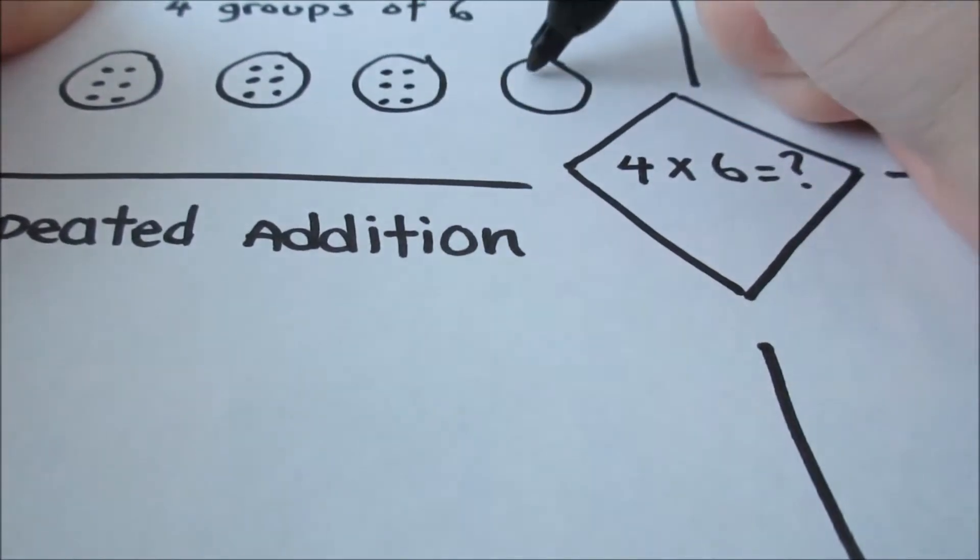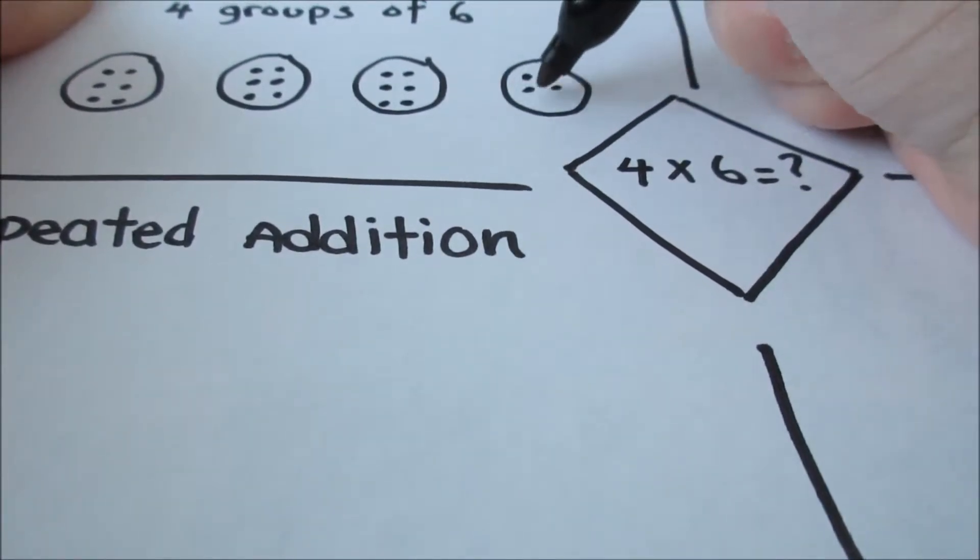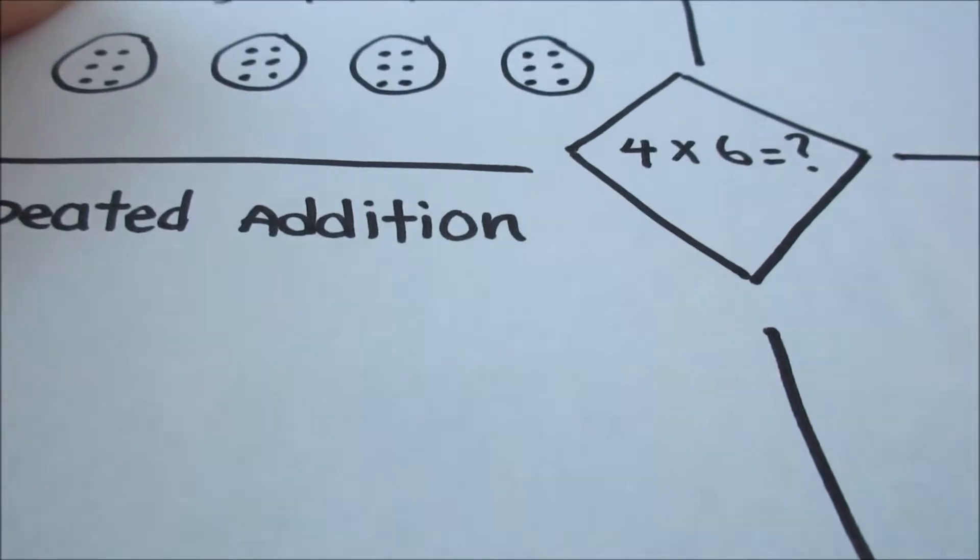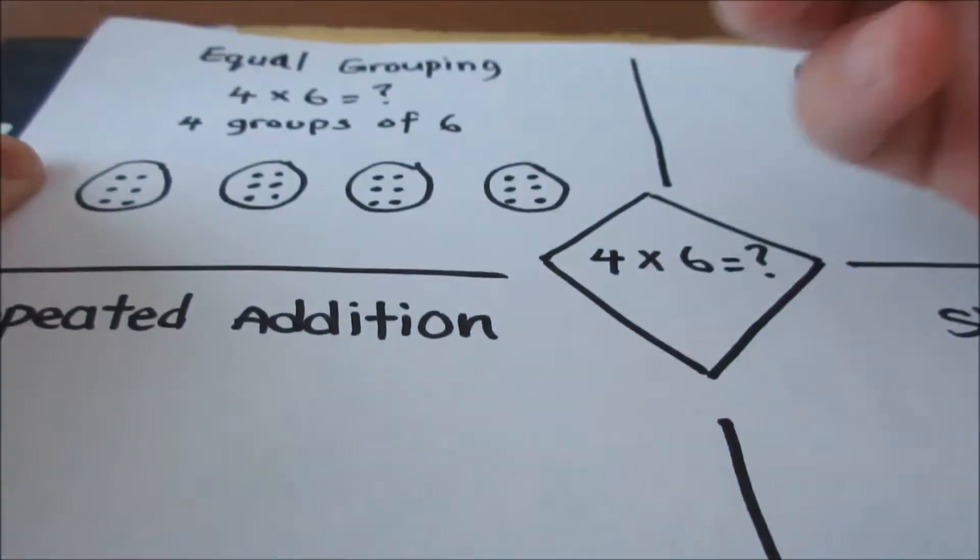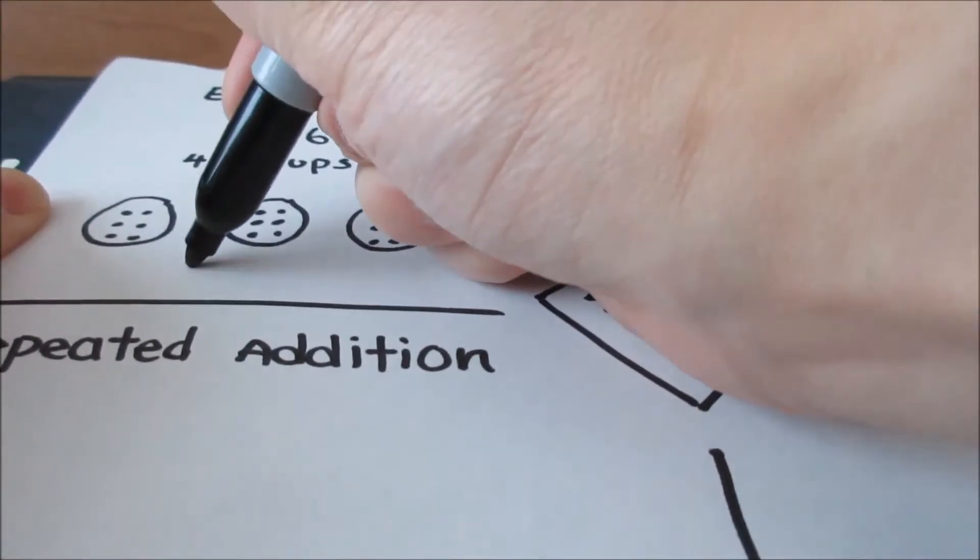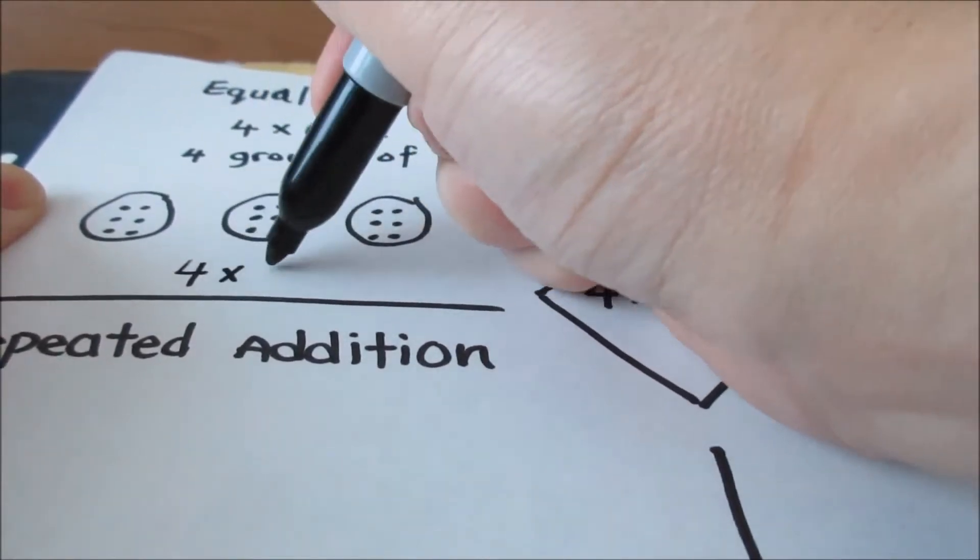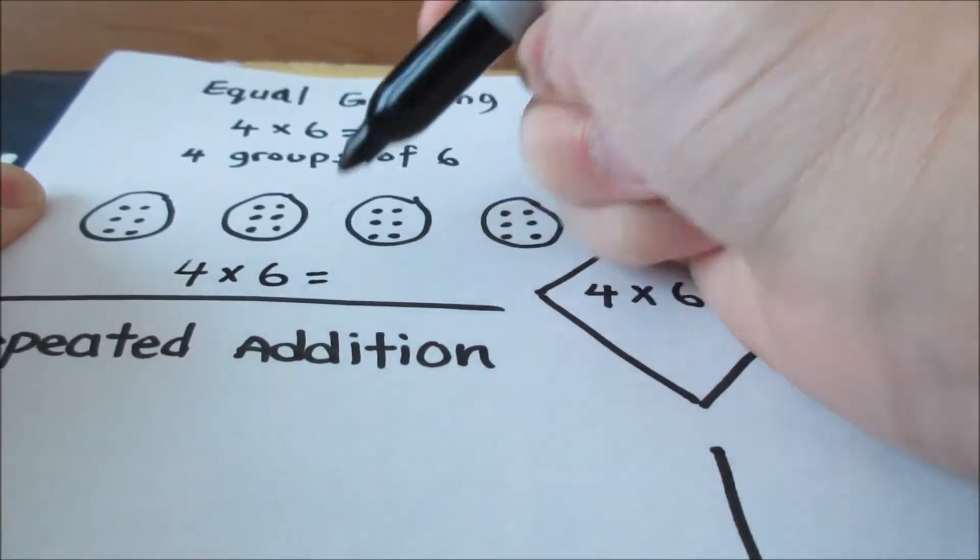When I'm done drawing all of the 6s in the groups, I can count up the number of objects I have in total. So then 4 times 6 is equal to...